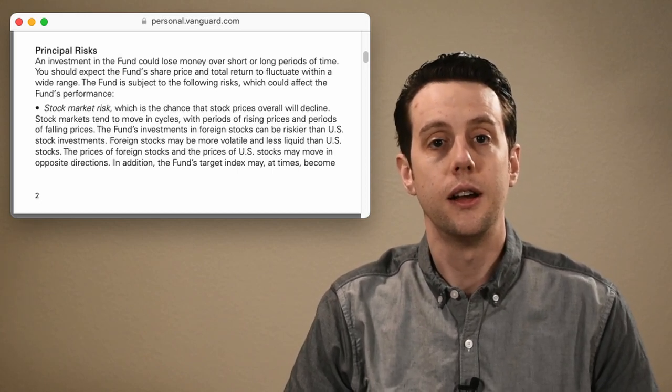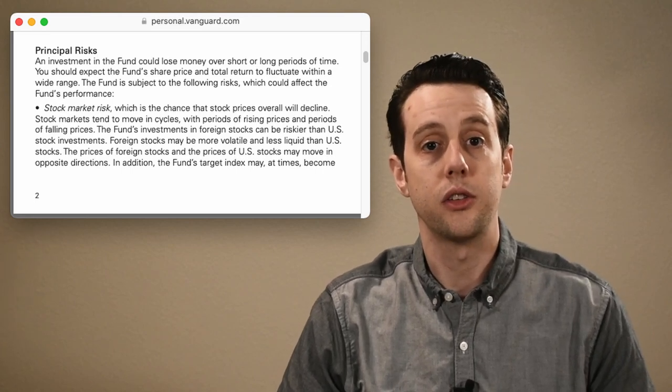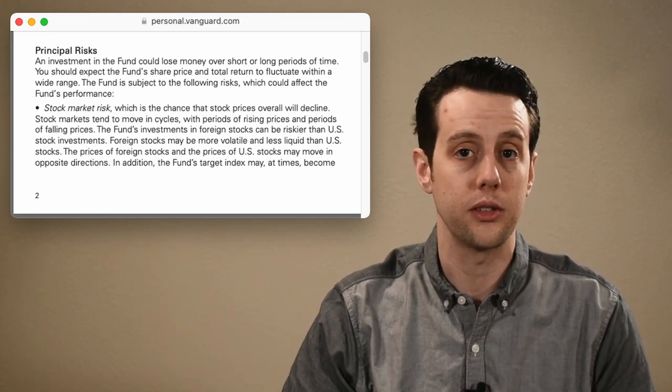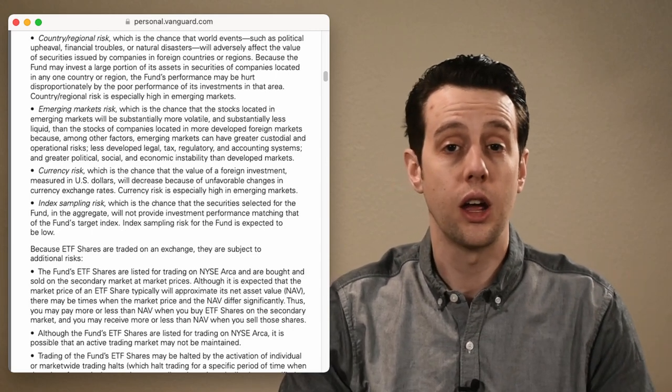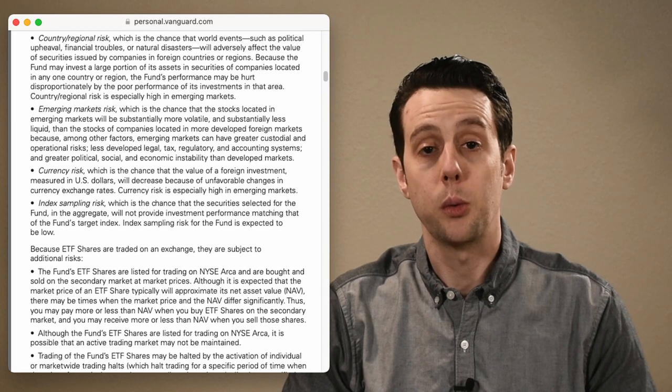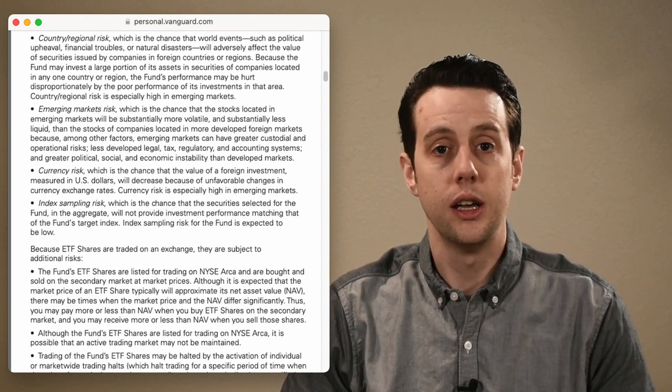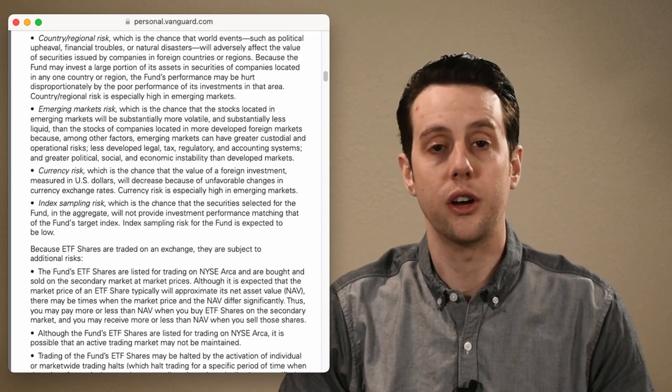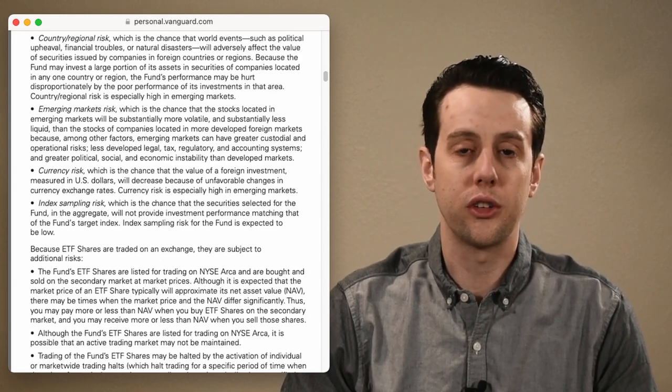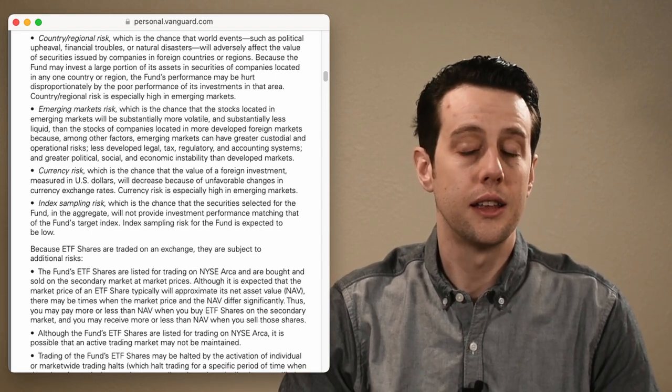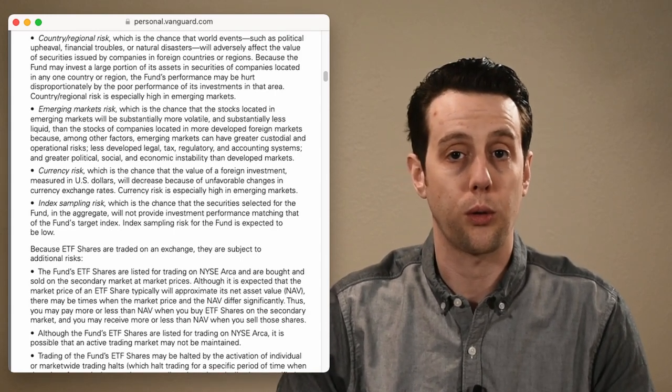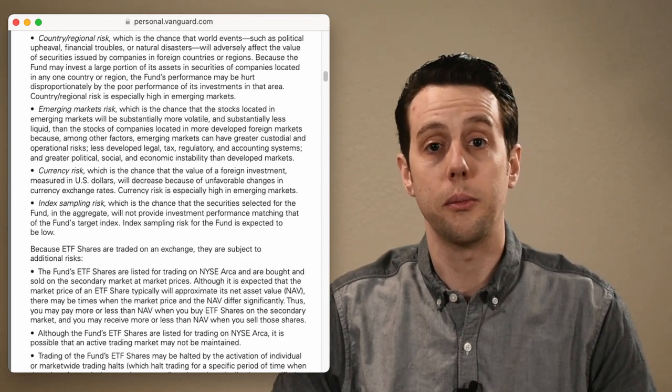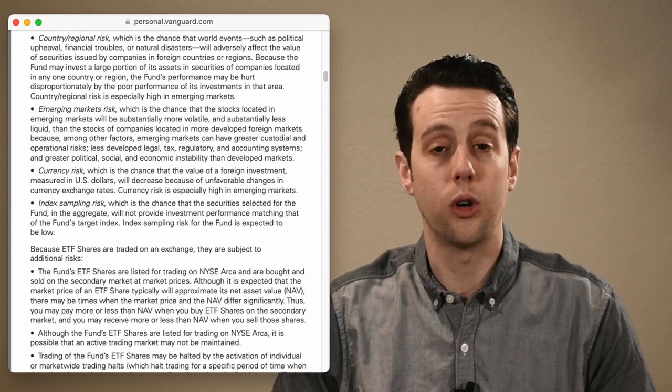Next, let's look at the principal risks outlined in the prospectus. The first is stock market risk. Stocks are one of the most risky types of investments. Since this fund invests in international companies, it also has country or regional risk, emerging markets risk, and currency risk. With index funds, there is always the risk that the fund does not match the performance of the index it's tracking. This is because most funds don't buy every single company in the index. They use statistical sampling techniques to keep costs low, but still try to match the index's performance. Index ETFs also have some other risks listed here, which I won't cover in this video.